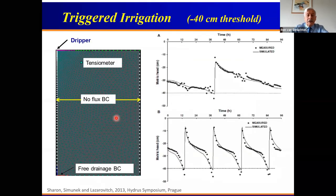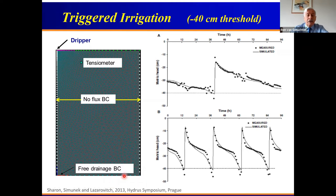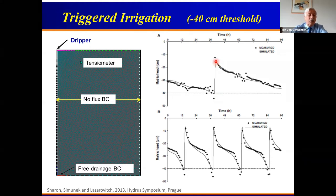Another side to this is not just how to irrigate, but also when to irrigate. This was also done with HYDRUS, where people would irrigate depending upon the water stress in the root zone. An experiment by Sharon Simunek and Lazarevich placed a tensiometer in the root zone and started irrigating when the tensiometer indicated a certain stress, in this case about minus 40 centimeters, then irrigated until the tensiometer gave a value much closer to saturation. This shows the system is basically automated — an issue of not just how, but when and how much to irrigate.